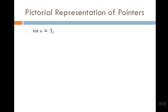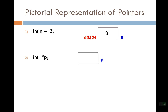So after this statement is executed, this is the scenario. This is our variable — the name is n, the memory address is 65524, and the value is 3. Here we have made a pointer p. Space is allocated for pointer p. The next statement executed is p = &n. So the address of n, which is 65524, goes into the value of p.